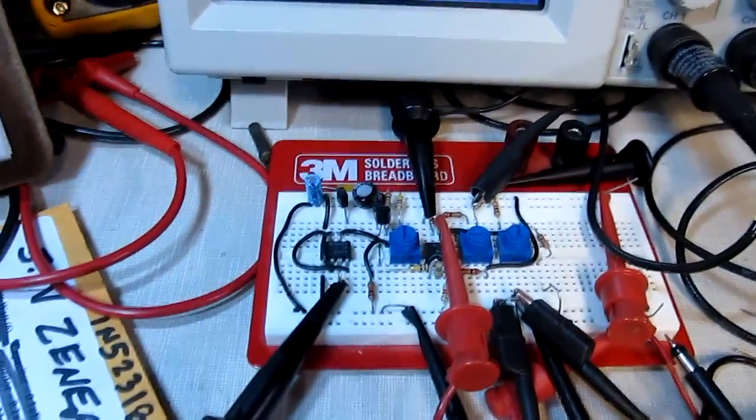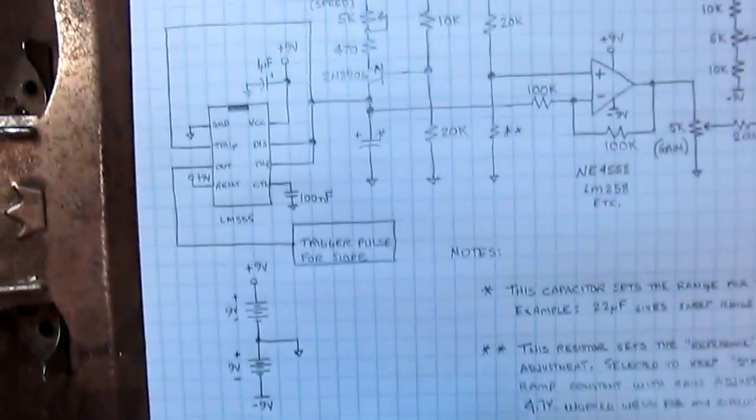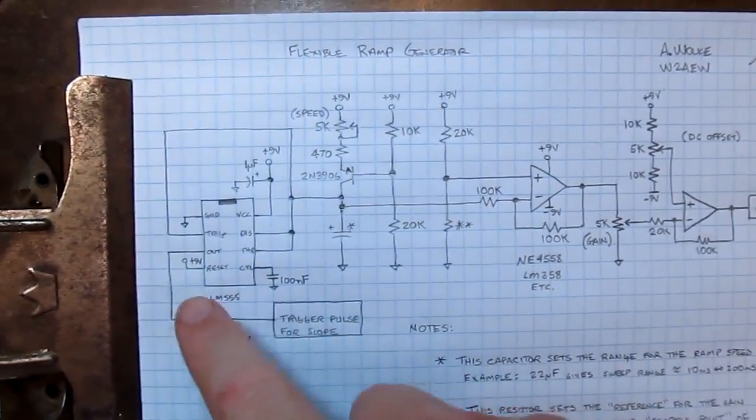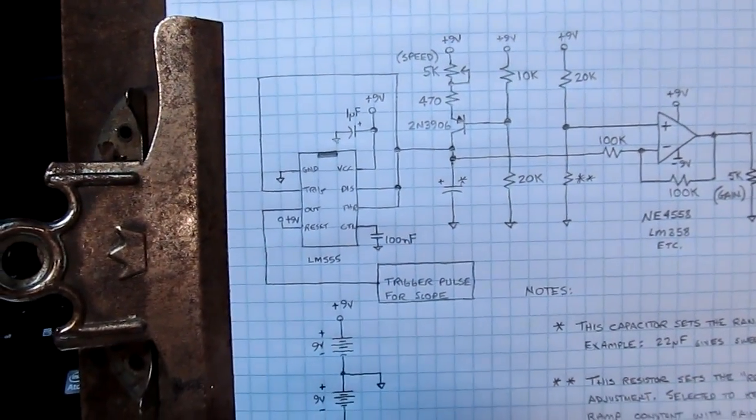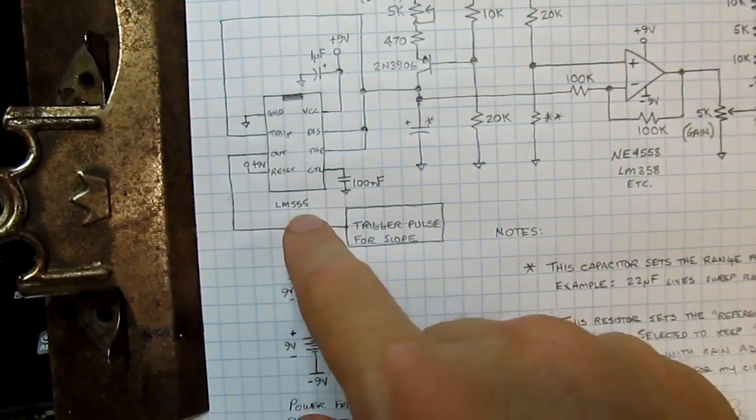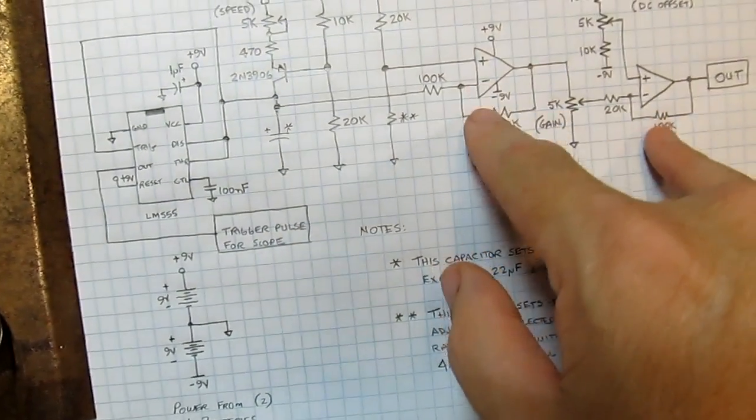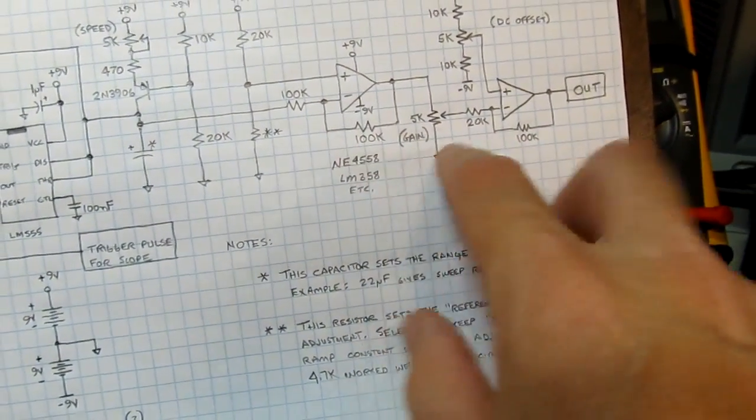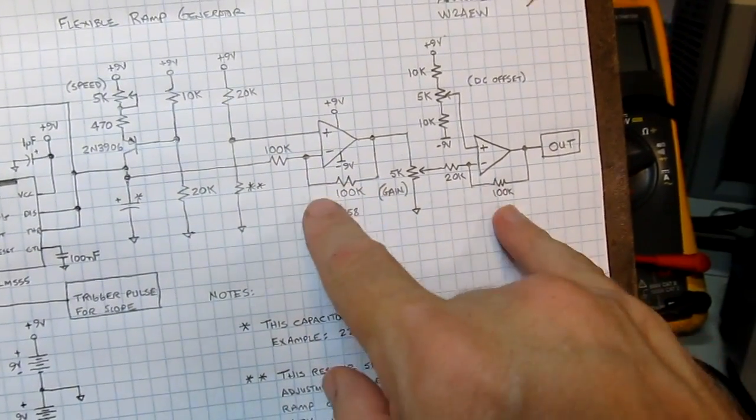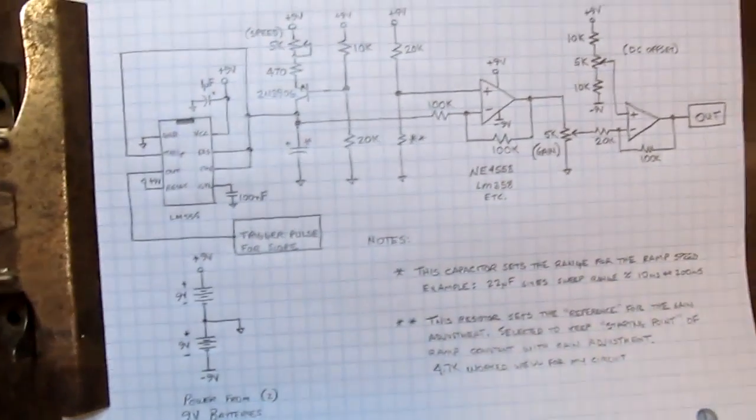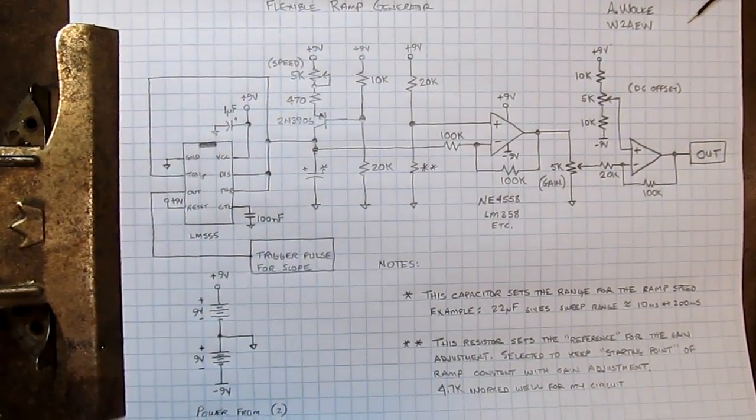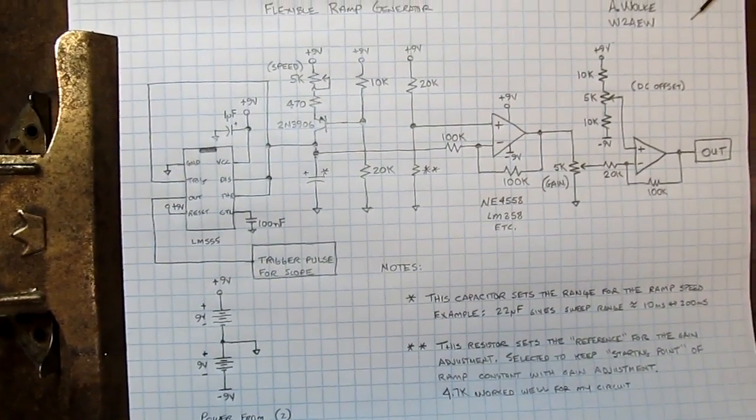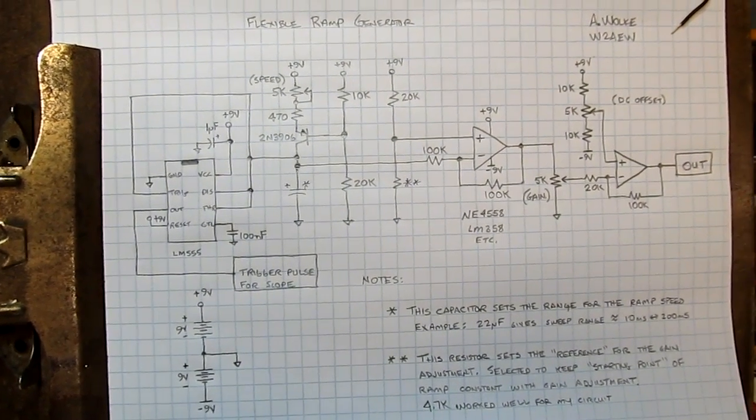So anyway, I hope you found this video useful. It's kind of a fun little circuit. It could be improved a lot with different types of devices, but I wanted to build this with very common, easily found components like an LM555, any kind of almost general purpose, either dual or a pair of single op amps, and some very common parts. So anyway, thanks again for watching. Please leave me comments, let me know what you think, and we'll see you next time.